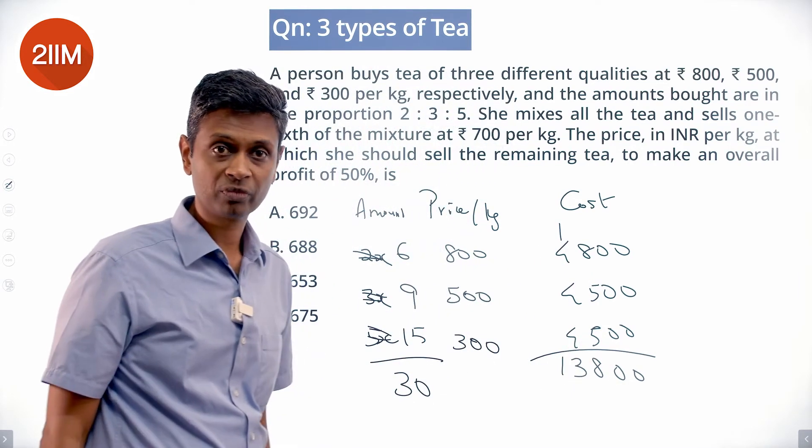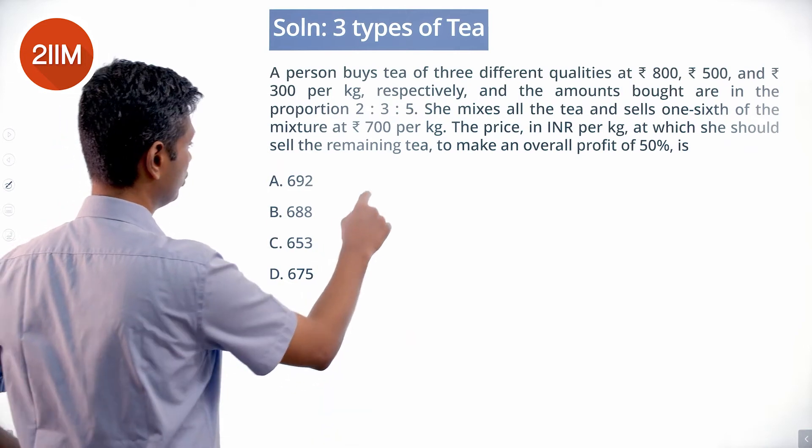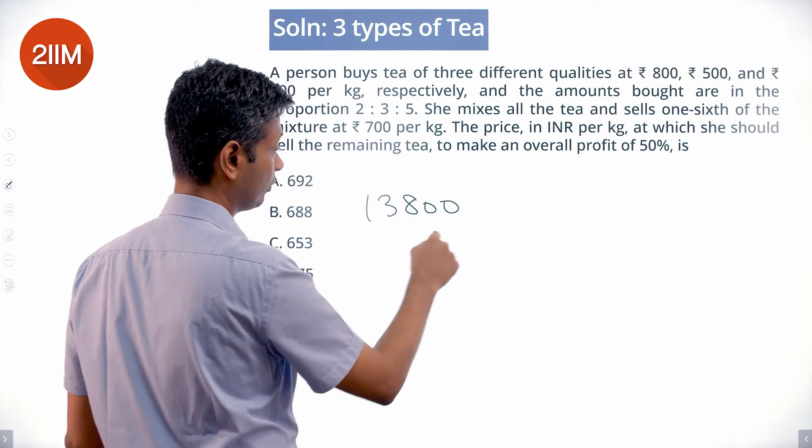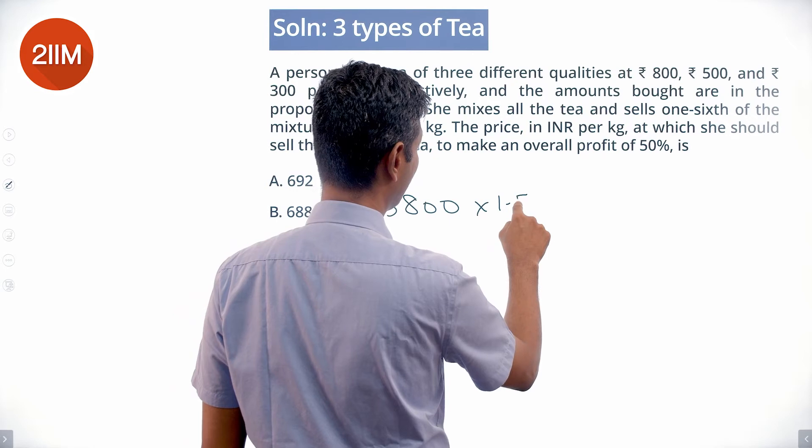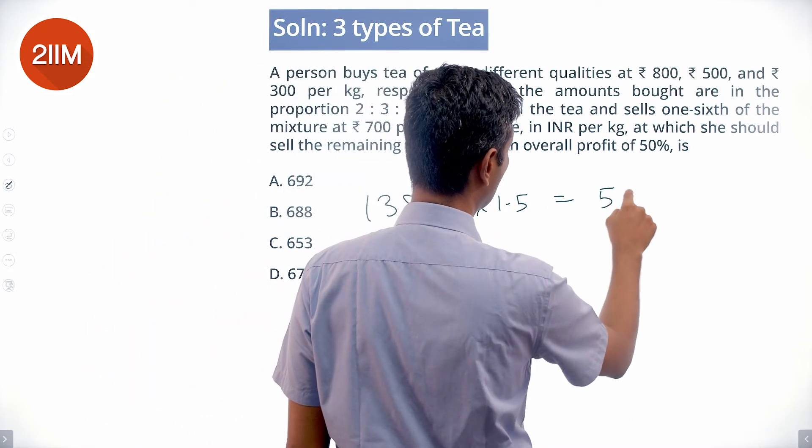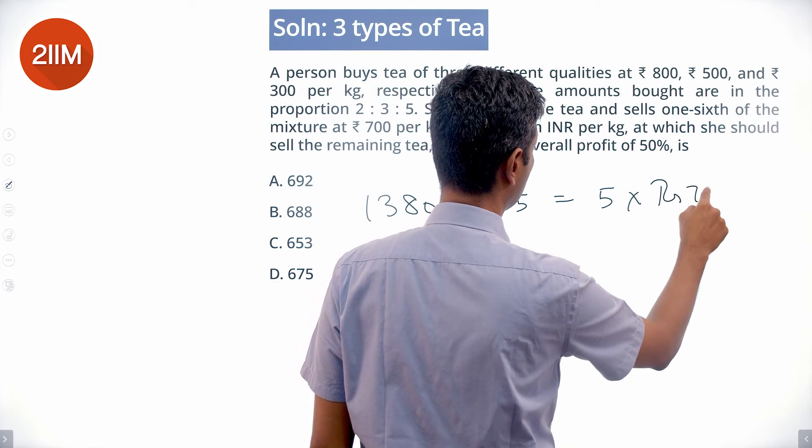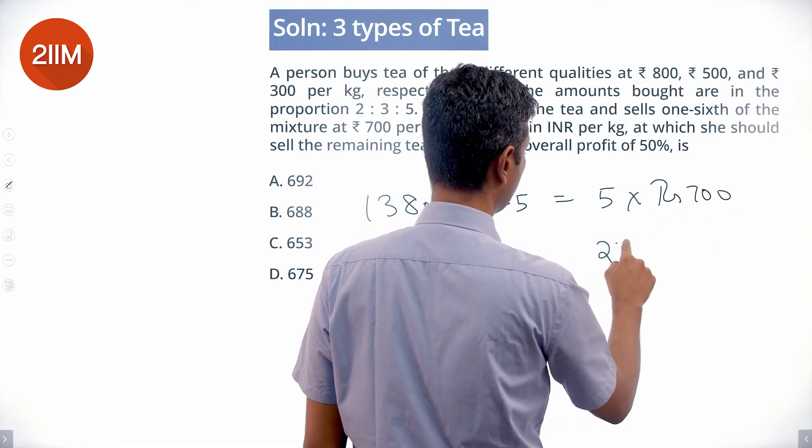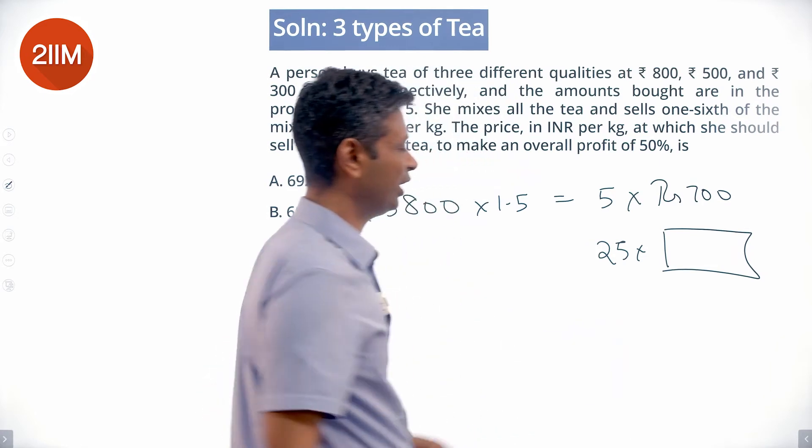She gets this by selling 5 kilograms at rupees 700, remaining 25 at some price. What we need to do is find that price. One-sixth of 30 is 5 kilograms that she sells at 700, the remaining at some price she sells, we need to find that price. 13,800 times 3/2, 1.5 is 3/2.